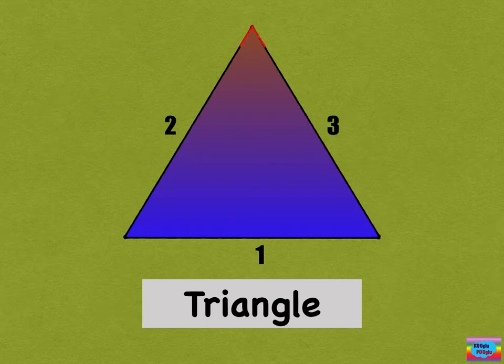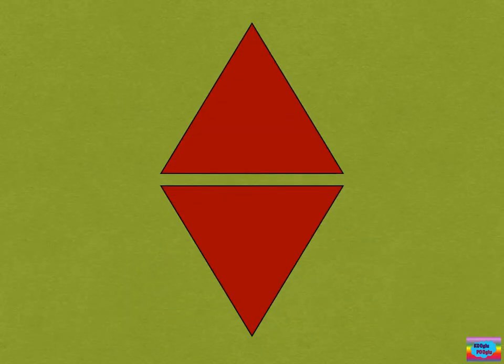And how many corners? One, two, and three. Three corners. And if you connect two triangles,